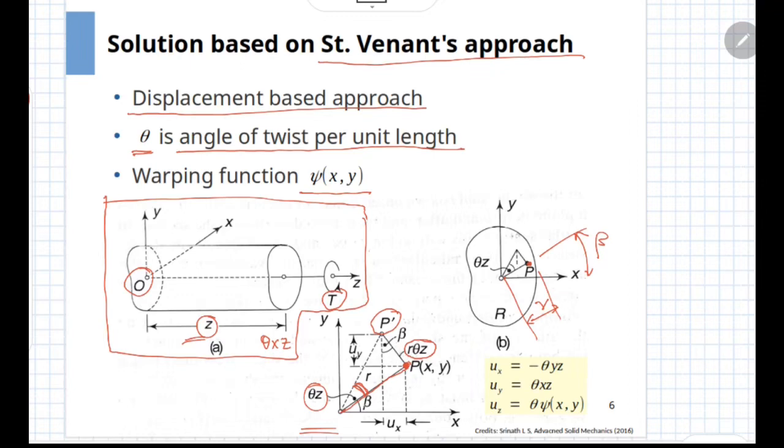Now, since this point is located at an angle beta with respect to x axis, its x displacement ux can be written in terms of r theta z and angle beta. Consider the right angle triangle here. We can write the value of ux as r theta z multiplied by sin of beta. And since point P' is to the left of point P, you will have a negative sign. So ux would be given as minus theta z times r sin beta. And as you can see, r sin beta is nothing but y, so it will be given as minus theta y times z.